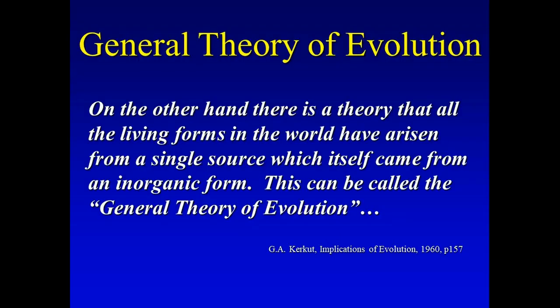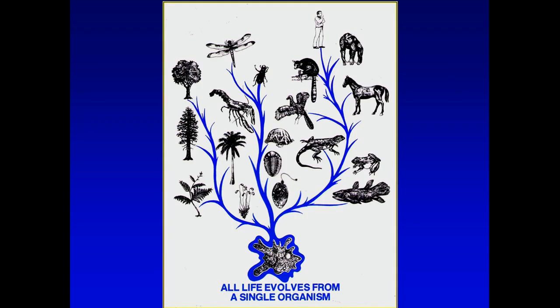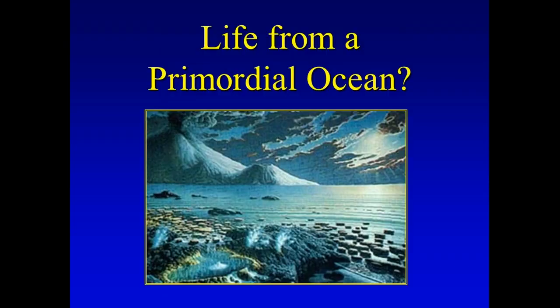Here's the general theory: the idea that all living forms arose from a single source, which came from an inorganic — which means dead — origin. That's the general theory. And this is what students get in their textbooks: that all life evolved from some single organism, some single cell, somewhere in a soupy prehistoric sea. That's the general theory right here in a nutshell.